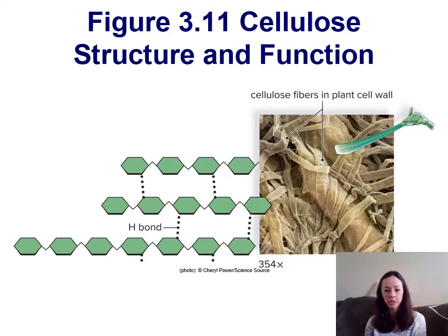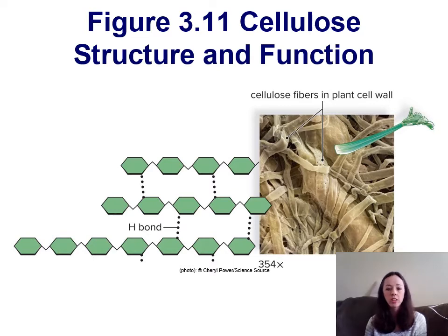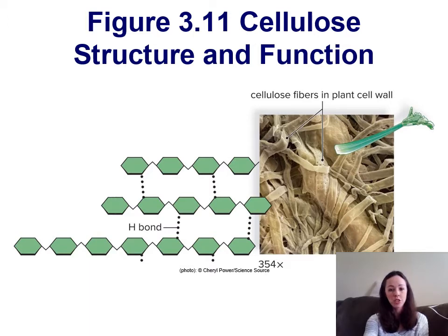Here's the chemical structure for cellulose — that polysaccharide found within the cell walls of plants. Notice how the glucose in cellulose is bonded together differently than in glycogen or starch. The way the glucose is bonded together eventually makes a very strong fiber that will crisscross on top of each other, giving the plant extra support and structure.